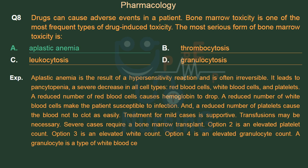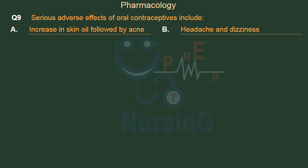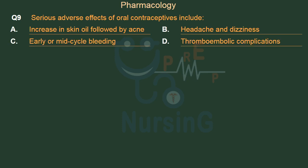Option 2 is an elevated platelet count (thrombocytosis). Option 3 is an elevated white count (leukocytosis). Option 4 is an elevated granulocyte count (granulocytosis). A granulocyte is a type of white blood cell. Serious adverse effects of oral contraceptives include: Option A: Increase in skin oil followed by acne. Option B: Headache and dizziness. Option C: Early or mid-cycle bleeding. Option D: Thromboembolic complications.